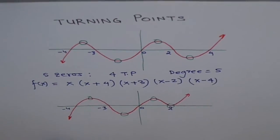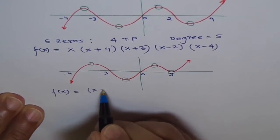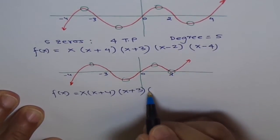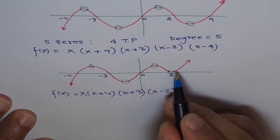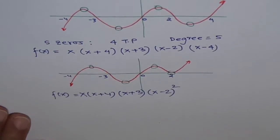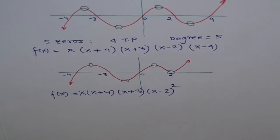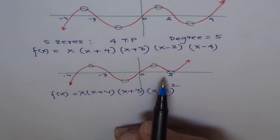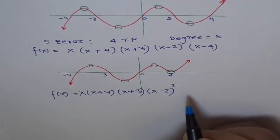What is the possible equation? (x+4)(x+3)(x)(x−2)² — because the multiplicity is 2, it bounces back. The degree is still 5. Now how many turning points this time? 1, 2, 3, 4. Same number of turning points: 4 turning points.